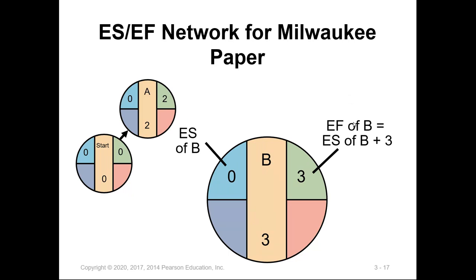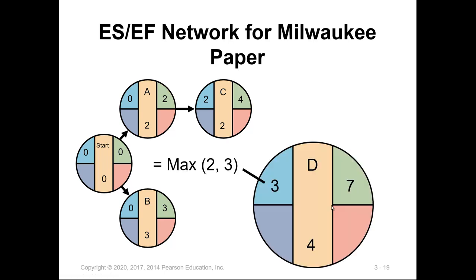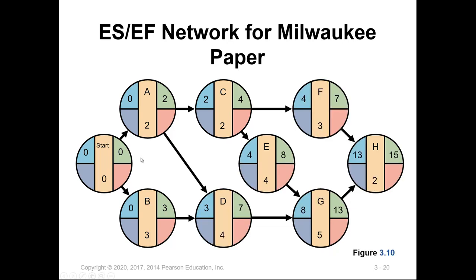Applying the same rule to activity B results in an early finish of 3 weeks — it starts at 0 and with a duration of 3, the early finish is 3. For activity D, which depends on both A and B, we take the maximum of the finish times of those two activities. The maximum is 3, and this constrains when we can start D. So the early start for activity D is 3. Completing all activities, the network diagram will look as shown in this figure.